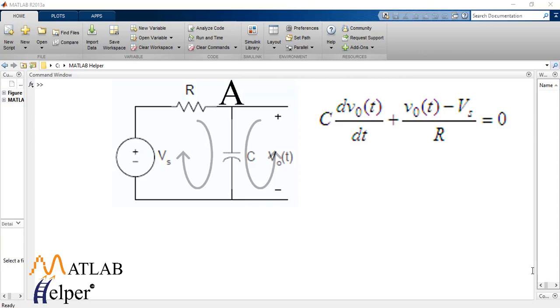Now at t = 0 the capacitor is not charged therefore V0 = 0. And hence the solution to equation above will be Vout(t) = Vs * (1 - e^(-t/tau)) or (1 - e^(-t/RC)).